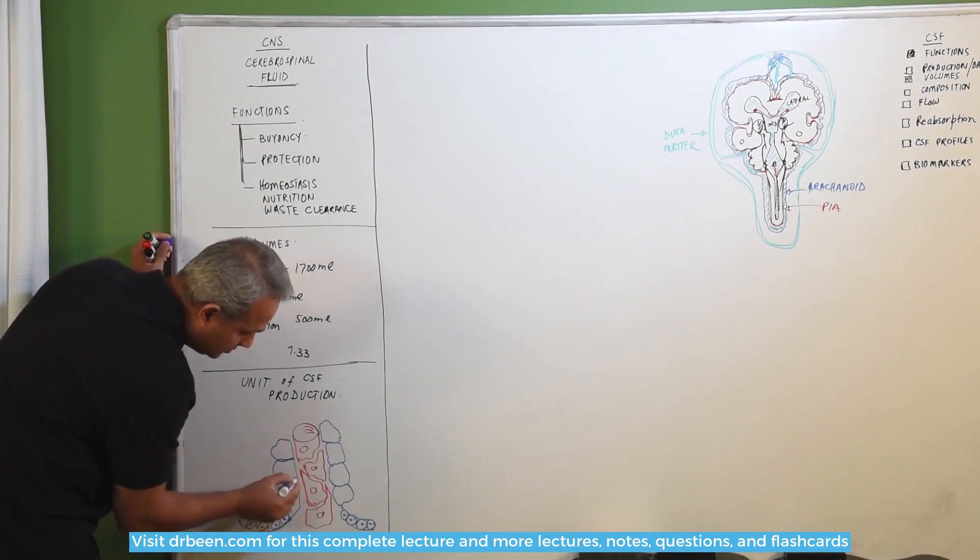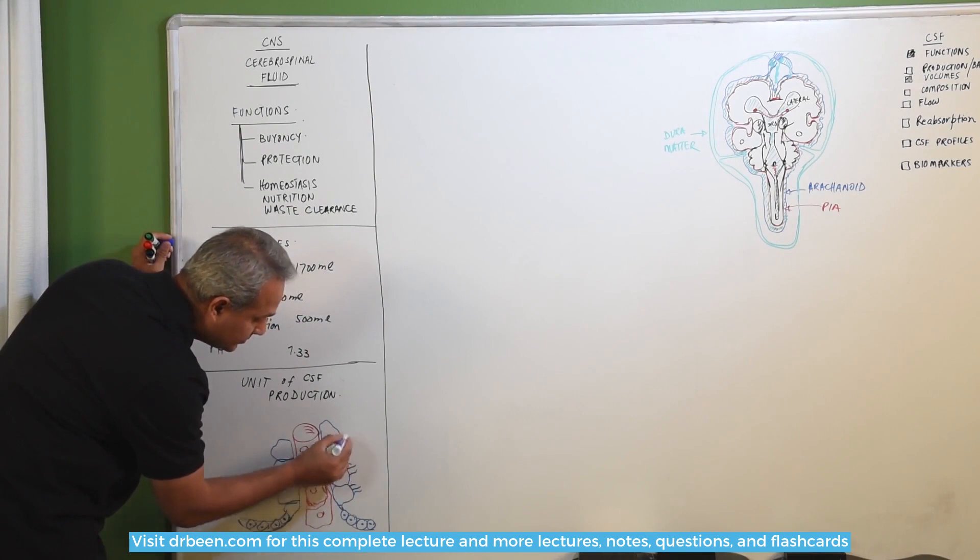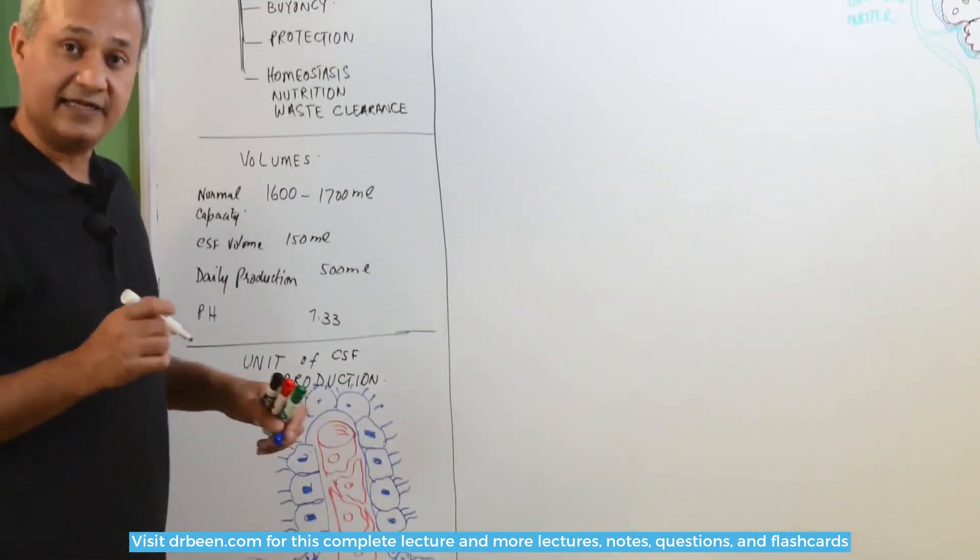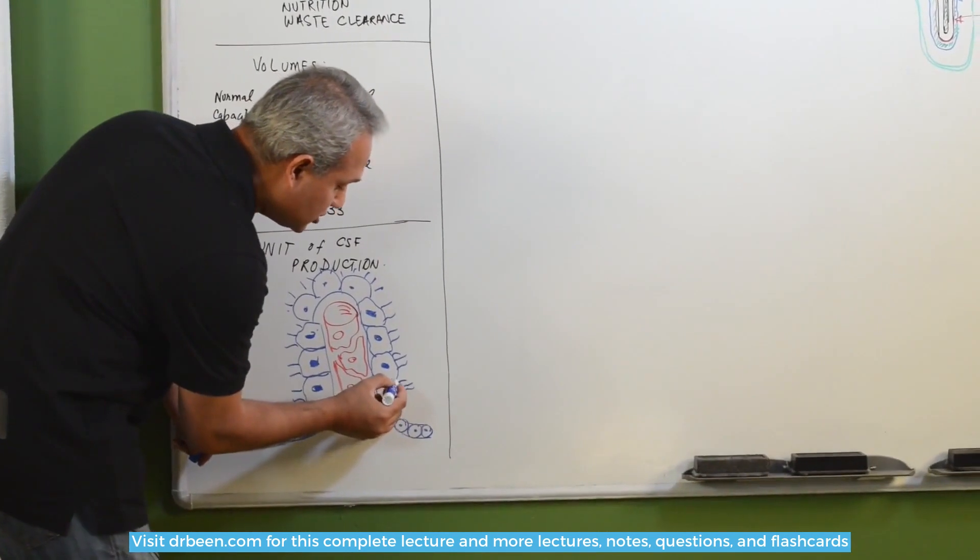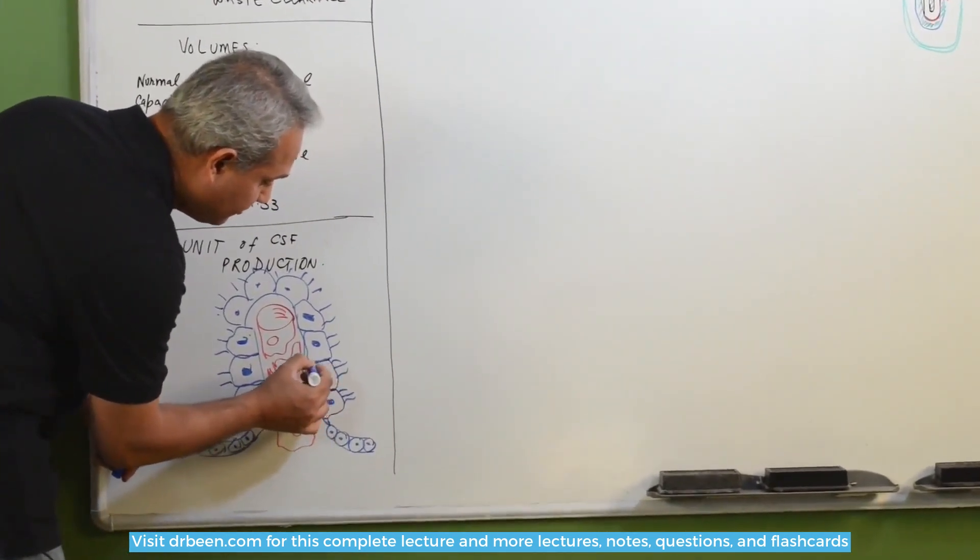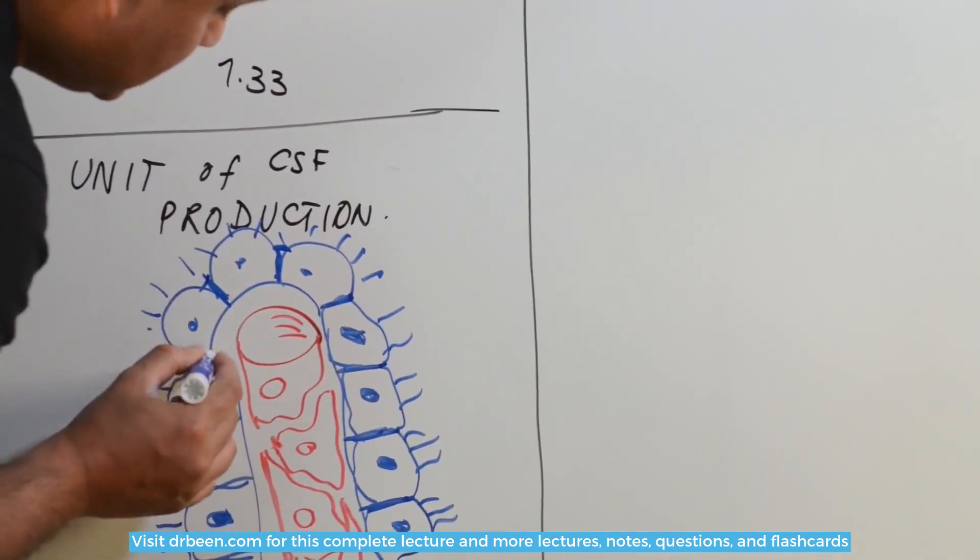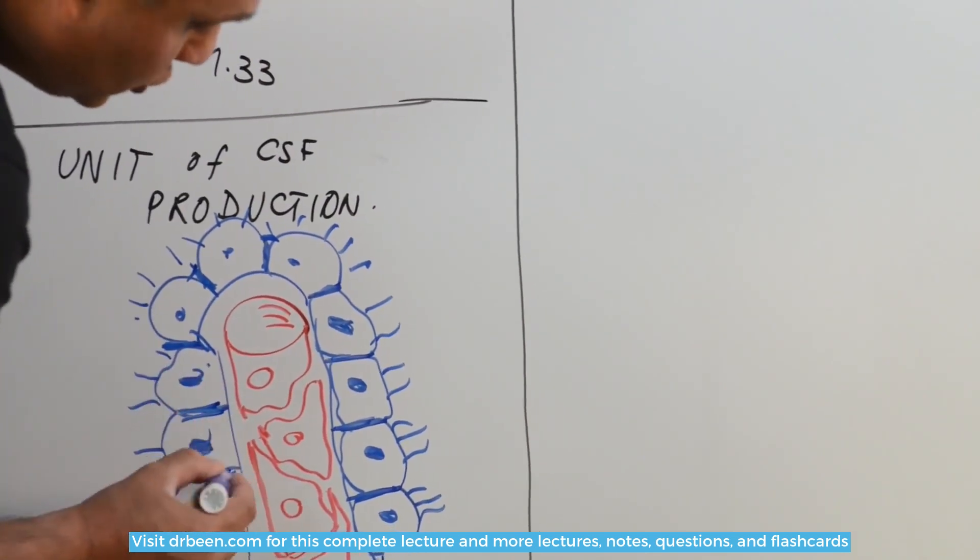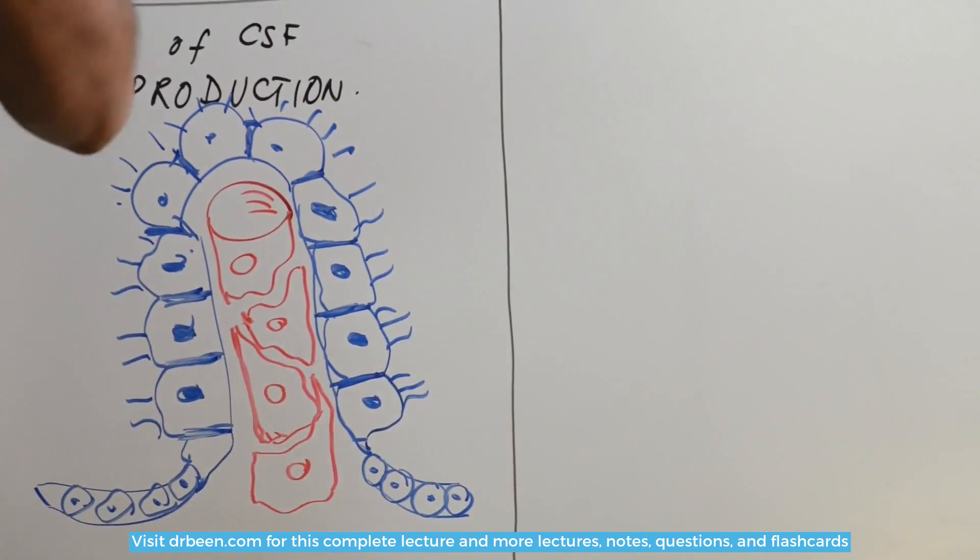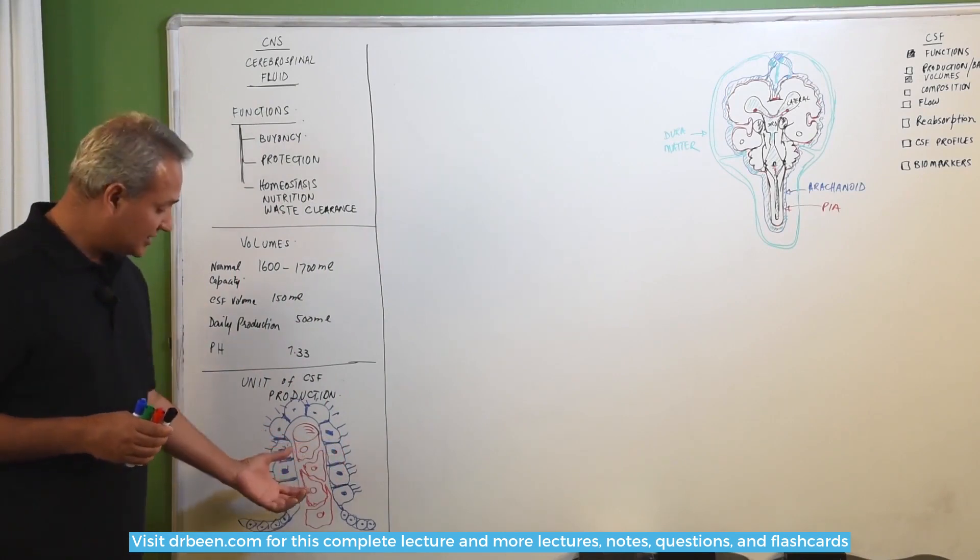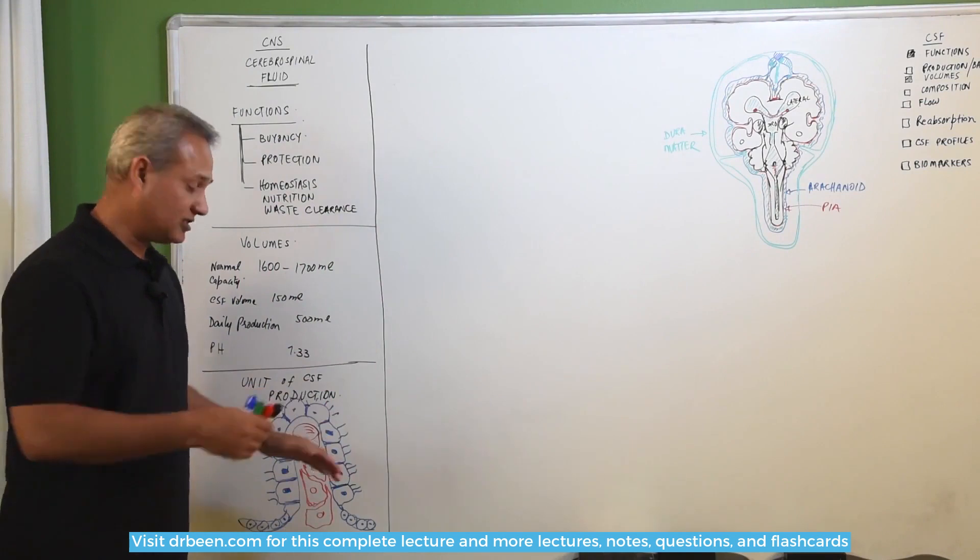Ependymal cells become cuboidal ciliated. Now, important thing: there are tight junctions between the cells. That means these cells would not allow any material other than water to leak through the pores between them. They are tightly bound. The reason for that is we really have to control the substances that are part of the blood from entering the CSF.